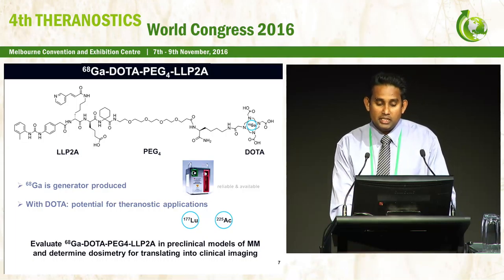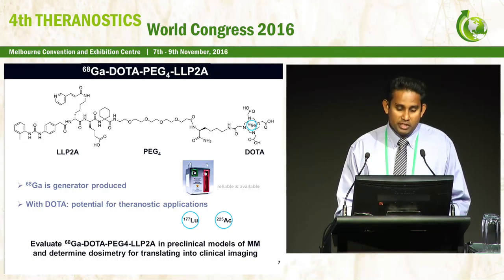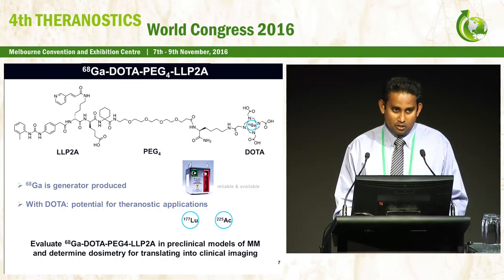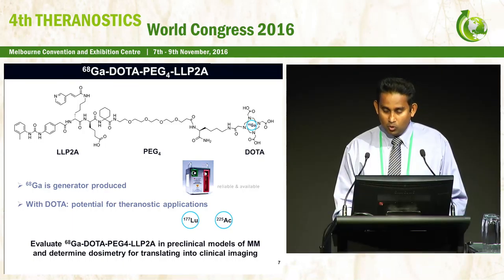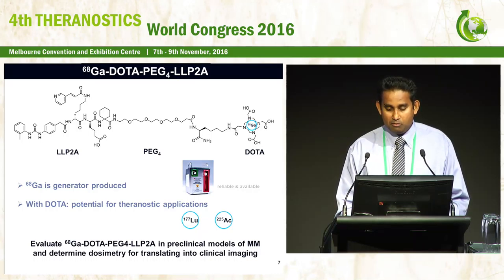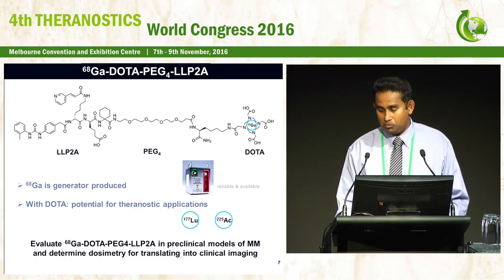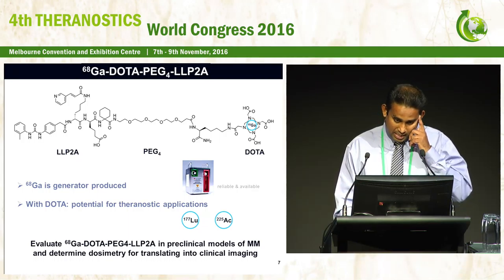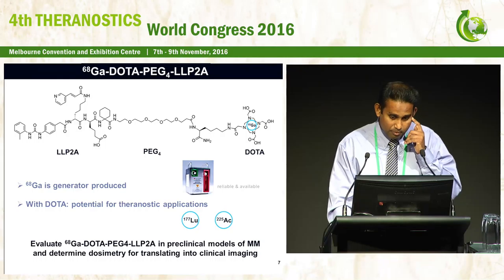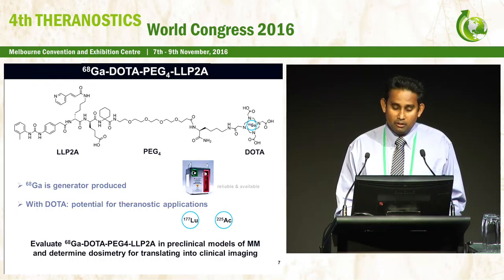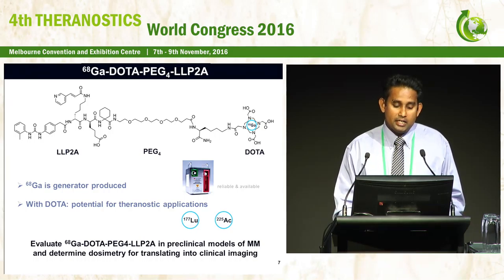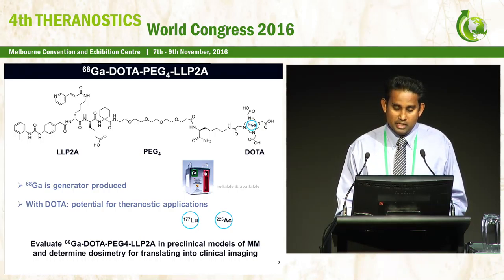Using this data, it opens a window for potential theranostic applications. We have already done some test labeling with lutetium-177 and actinium-225 therapeutic isotopes. The goal of this study is to evaluate gallium-DOTA-PEG-LLP2A in preclinical models of multiple myeloma and determine dosimetry for translation into clinical imaging.